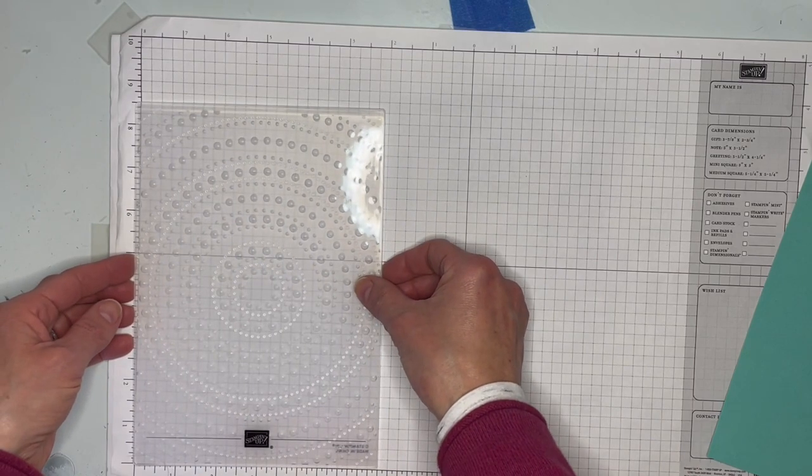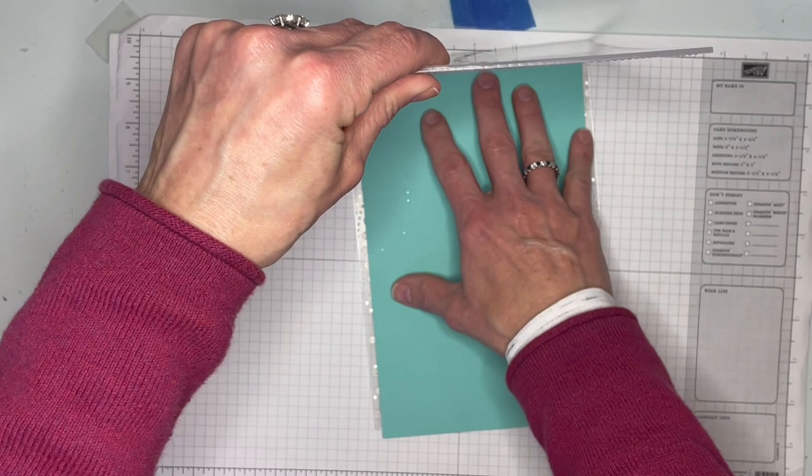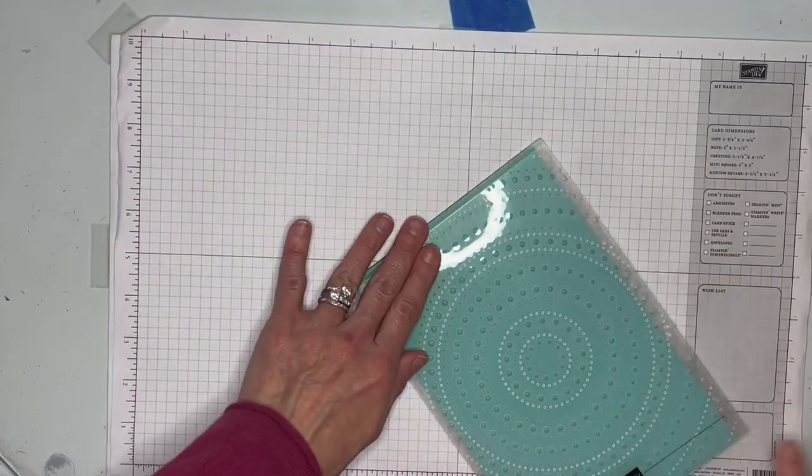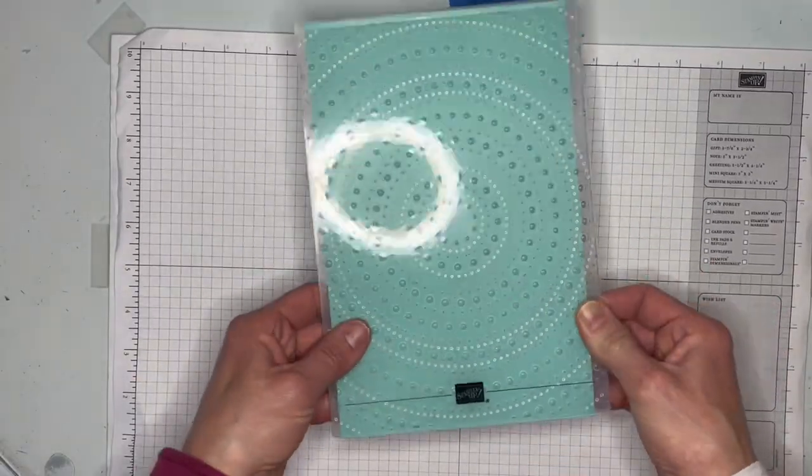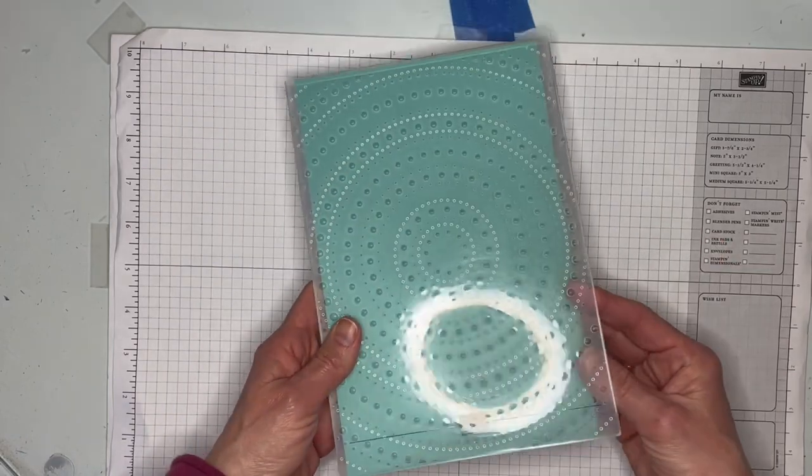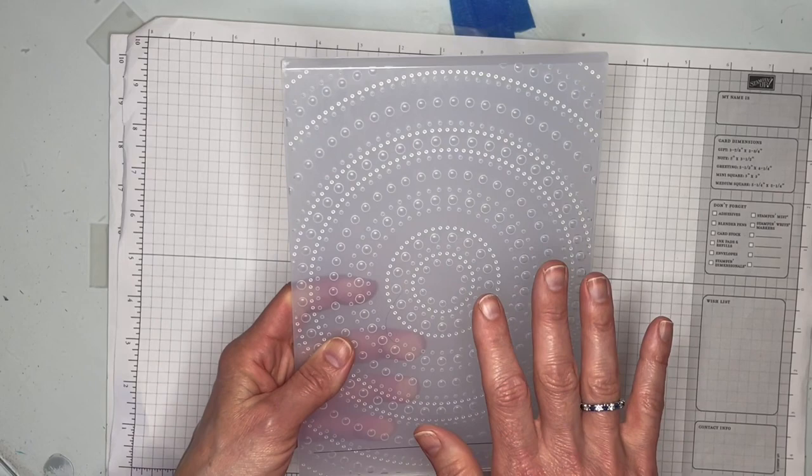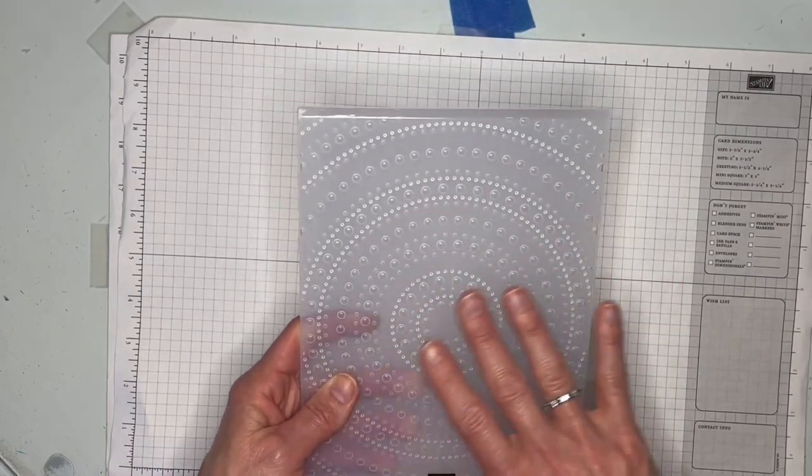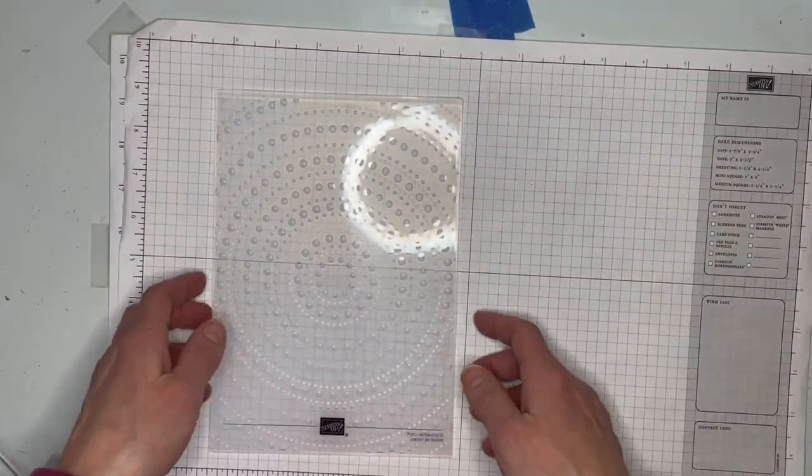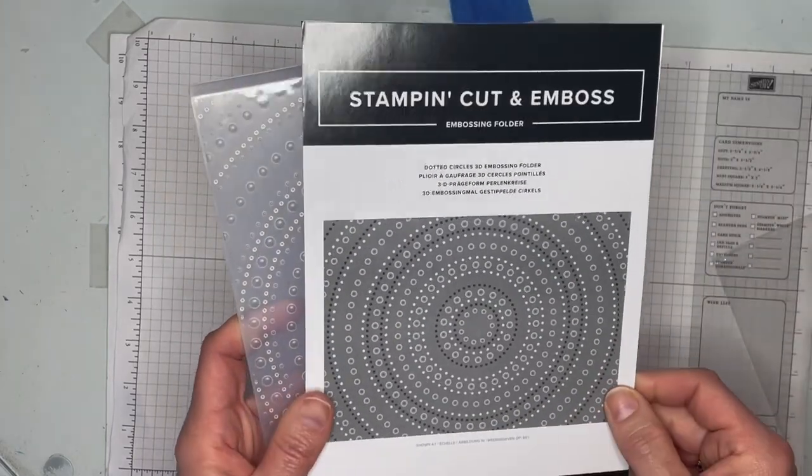So yes, you can definitely do a full, like a whole card front, almost a whole card front. It's a little bit short. The pattern doesn't quite go all the way to the top, but I mean, you could do that and it would just be a natural break in the pattern. That's pretty cool. I'm excited. I'm going to have to get the other ones. And this is great for scrapbookers too, who have larger areas to fill. You could get a really nice size panel embossed for some of your layouts. So again, that's the dotted circle 3d embossing folder.